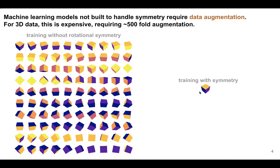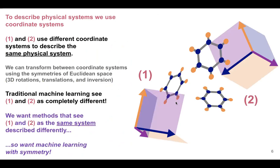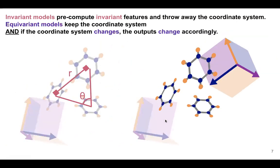If I train a model without rotational symmetry built in and want it to understand that a rotated cube should give similar outputs, I have to train on many orientations. With symmetry built in, I show it one and I'm done — much simpler, more robust, with further guarantees. We want methods that see two differently described coordinate systems as the same system described differently — machine learning with symmetry built in.